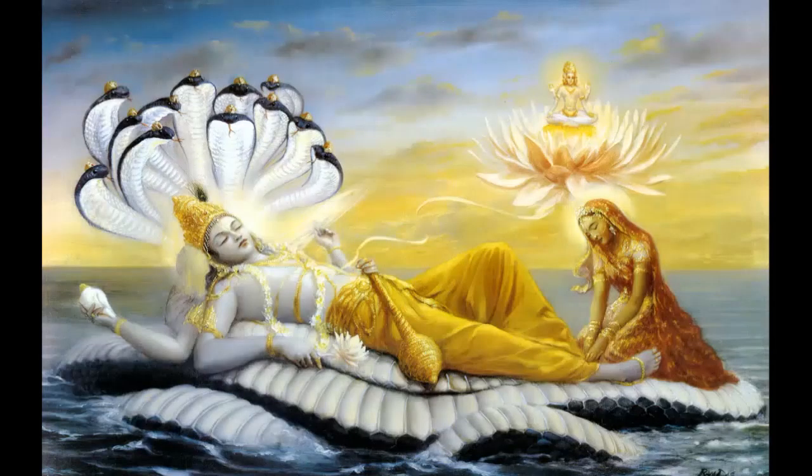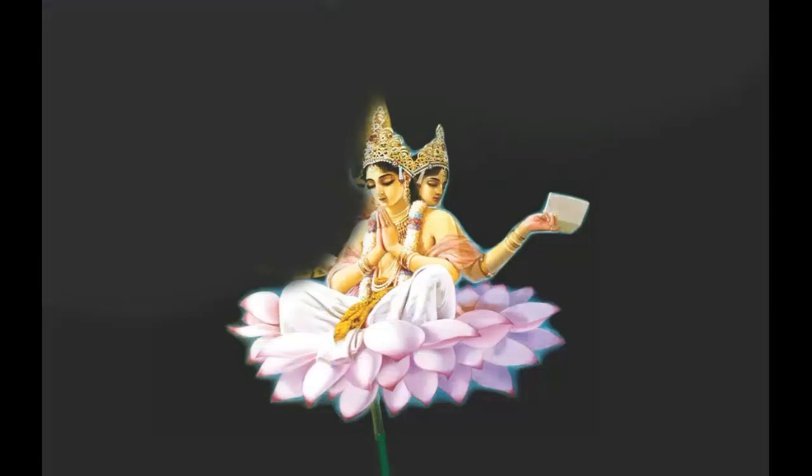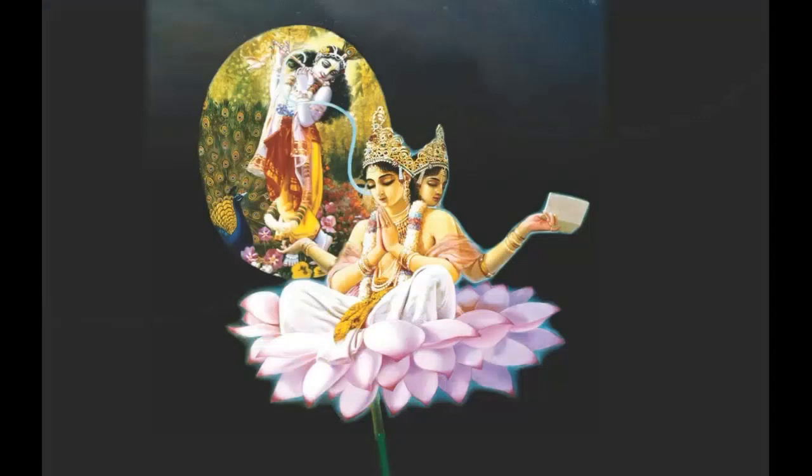Entering into the Hiranyagarbha, Brahma's egg-shaped universe, Garbhodakashayi Vishnu lies on the Garbhodaka ocean. A lotus stem emanates from his navel. The birth of Lord Brahma on the lotus flower is the secondary creation.